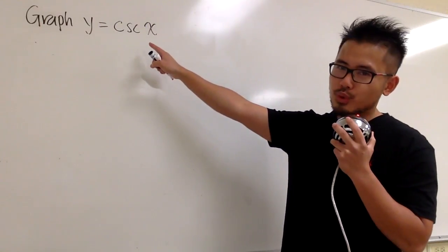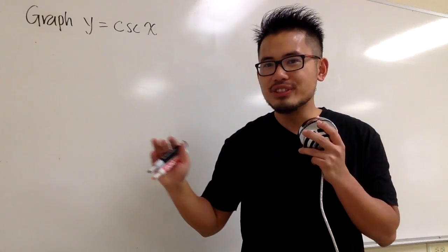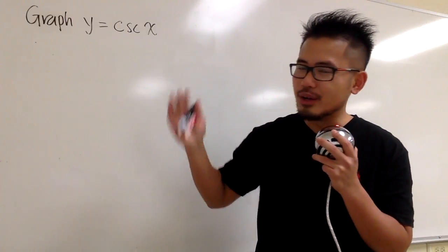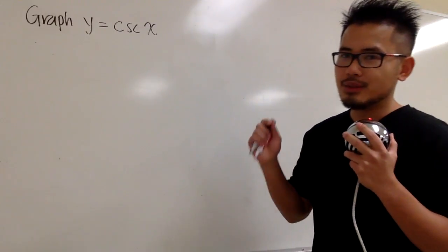Okay, we are going to graph y equals cosecant x, and you have to remember that tangent, secant, cotangent, and cosecant, they all have vertical asymptotes for the graphs. Therefore, we have to find the domain first.